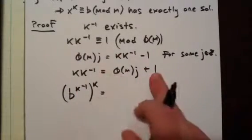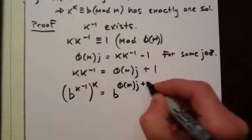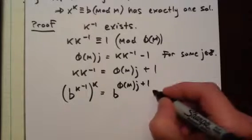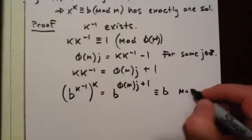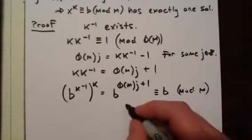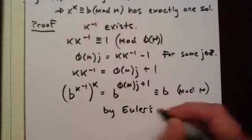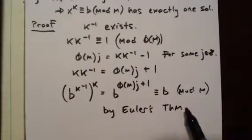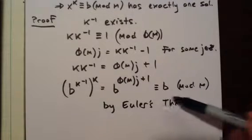Well, by this equation, this equals b^(φ(m)·j + 1). But this is congruent to b (mod m) by Euler's theorem. This is because gcd(b,m) = 1, which is the requirement for Euler's theorem.